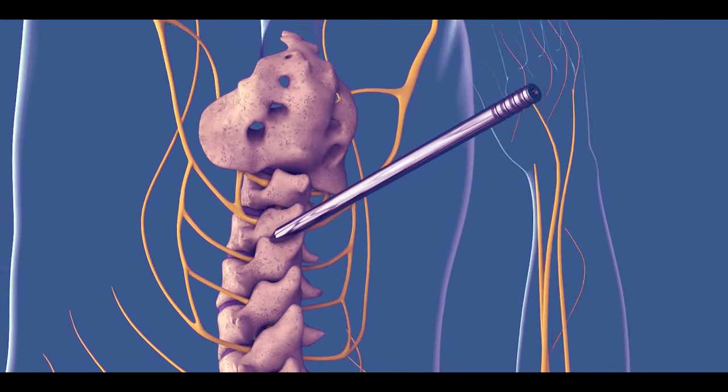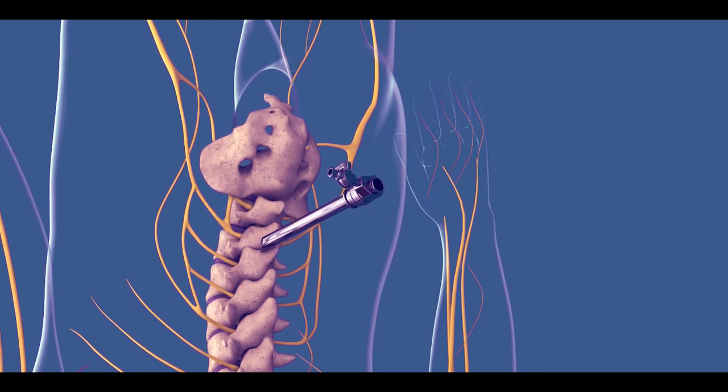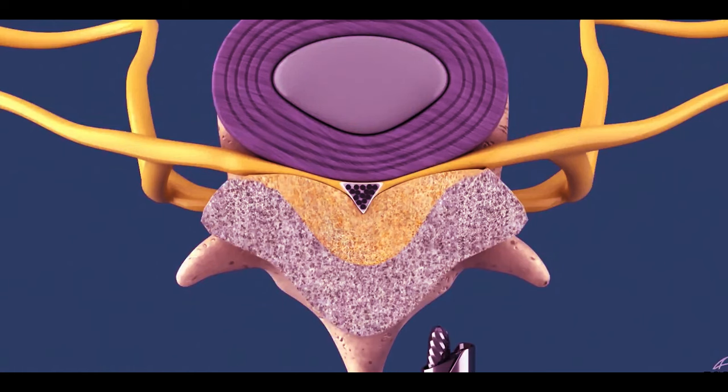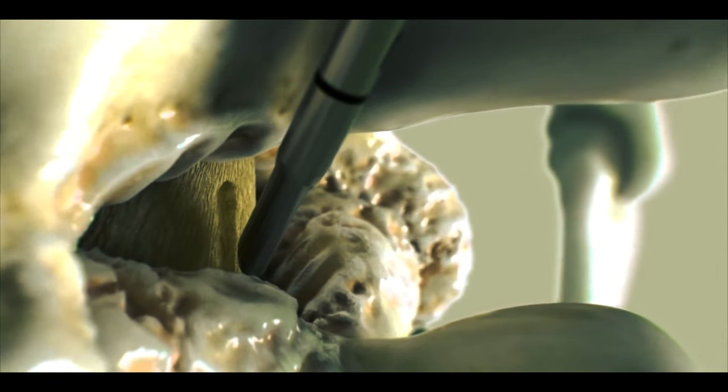The surgeon inserts a hollow tube called a portal through the fluoroscope into the spinal canal. A specific instrument is inserted through the portal into the spinal canal which has a sharp blade attached in front. This instrument removes extra tissues and bone parts from the compressed region of the spinal canal.